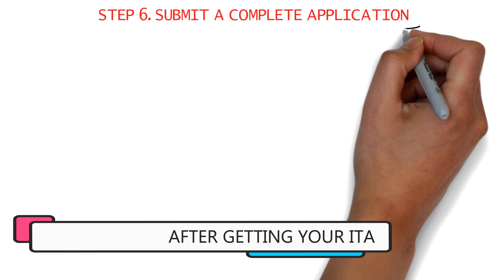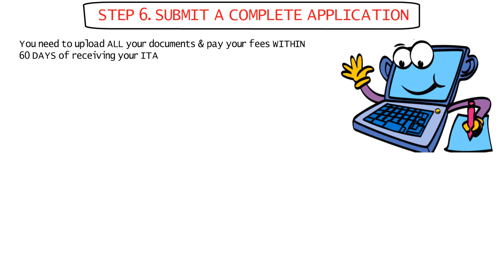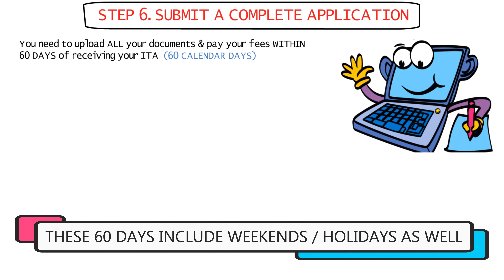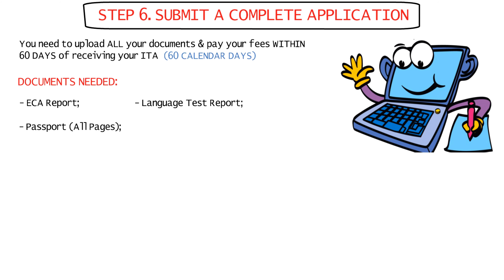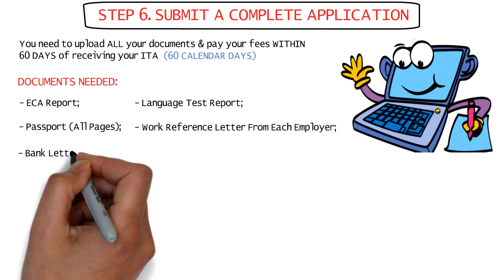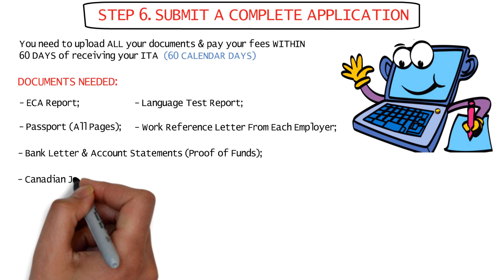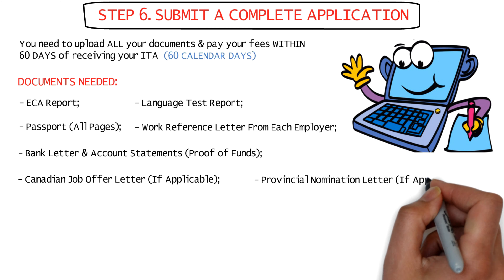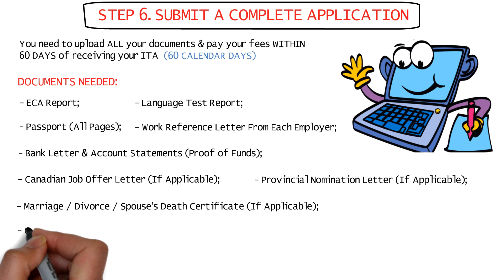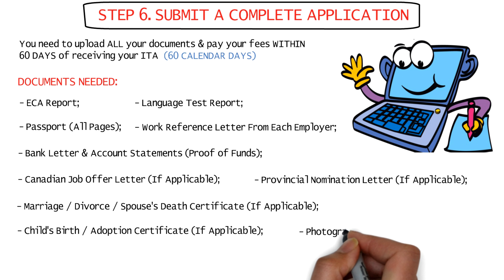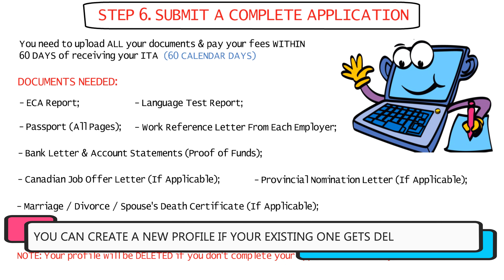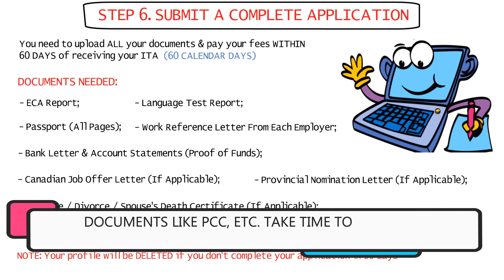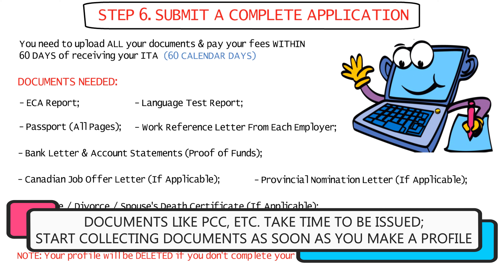After you get your ITA, you will have 60 calendar days — not business days, so it includes weekends and holidays — to submit a complete application, which means uploading all your documents and paying your fees. The documents you'll need to scan and upload are your ECA report, language test report, all the pages of your passport, CIC format work reference letters from each employer, official bank letter and account statements in the CIC format as your proof of funds, Canadian job offer letter if applicable, provincial nomination letter if you have one, your marriage, divorce, or spouse's death certificate if applicable, the birth or adoption certificate of your child if you have any children, and photographs in a specified CIC format. Since some documents take time to be issued, it's always best to start gathering your documents as soon as you create your Express Entry profile.